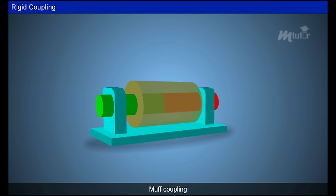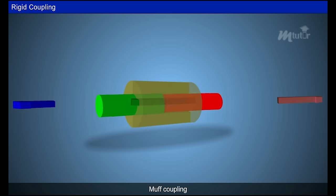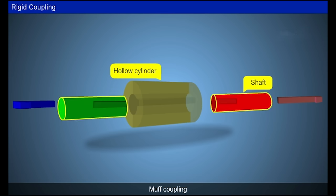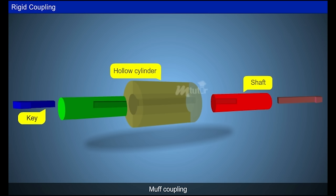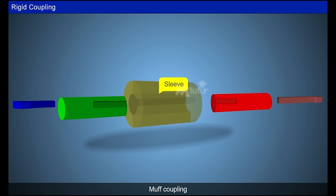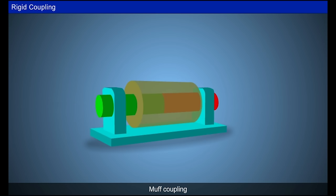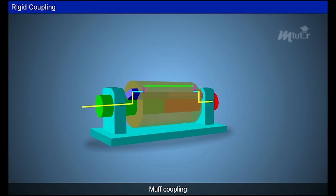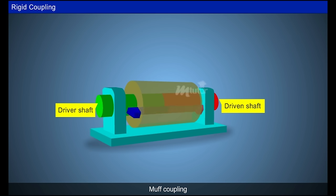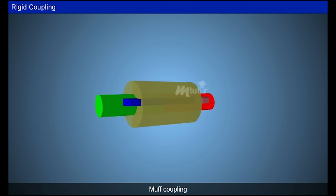The simplest type of rigid coupling is the muff coupling, in which a hollow cylinder is fitted over two shafts and locked by a key. The hollow cylinder looks like a sleeve, so it is also called sleeve coupling. The inner diameter of the sleeve is the same as the shaft diameter. Power transmission takes place between two parts — the sleeve and the key — where torque from the driver shaft is transmitted to the sleeve through the key. However, it is difficult to assemble and disassemble.